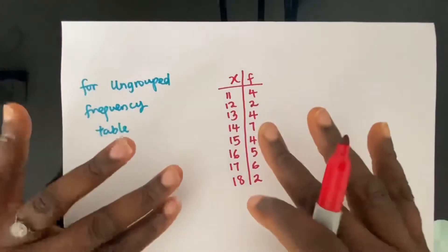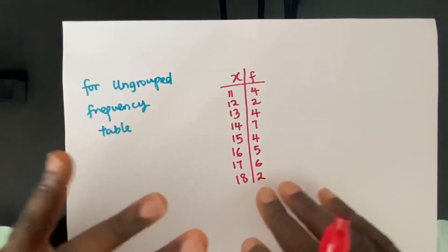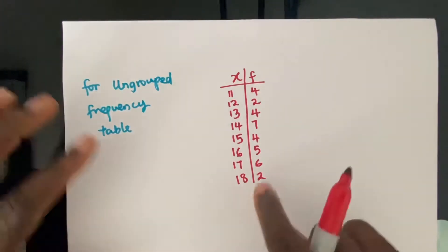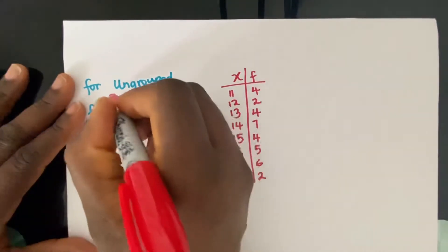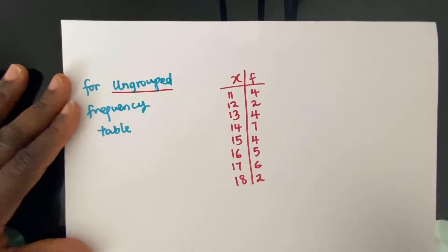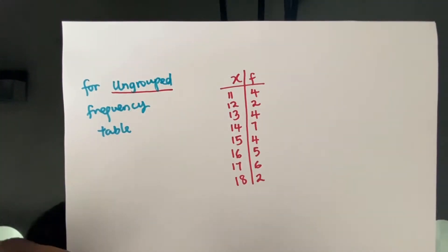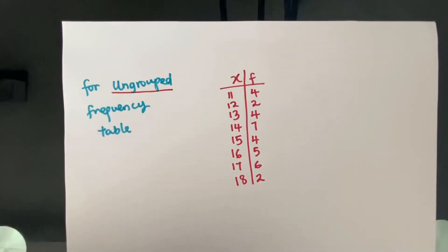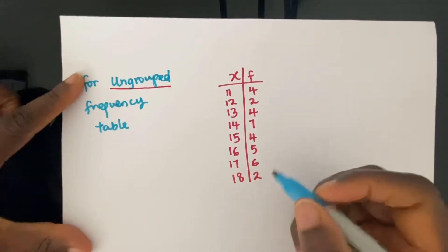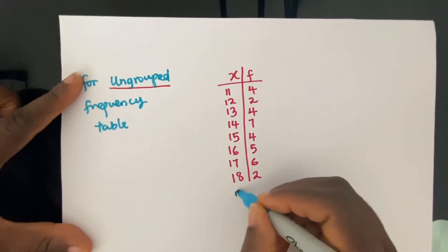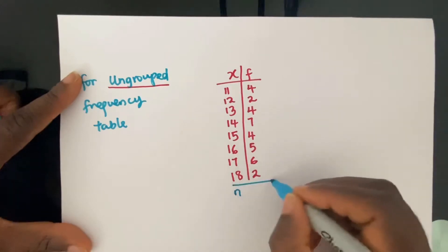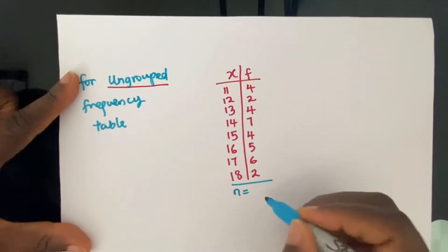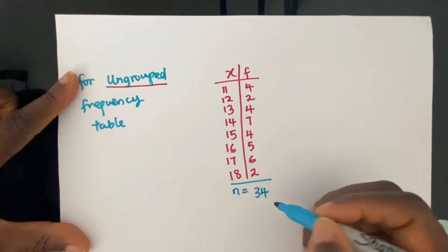So let's say you have this frequency table right here and you wanted to work out the median. It's an ungrouped frequency table. The first thing that you want to work out is the total frequencies — let's call that n. n would be equal to, if you add these all up, you're going to have 34.